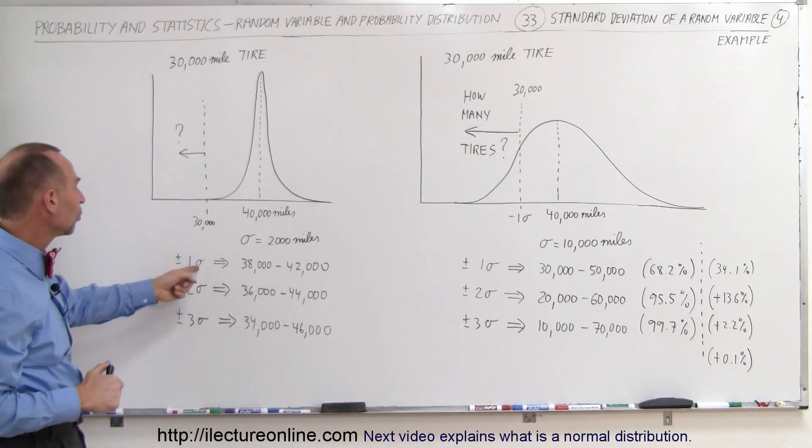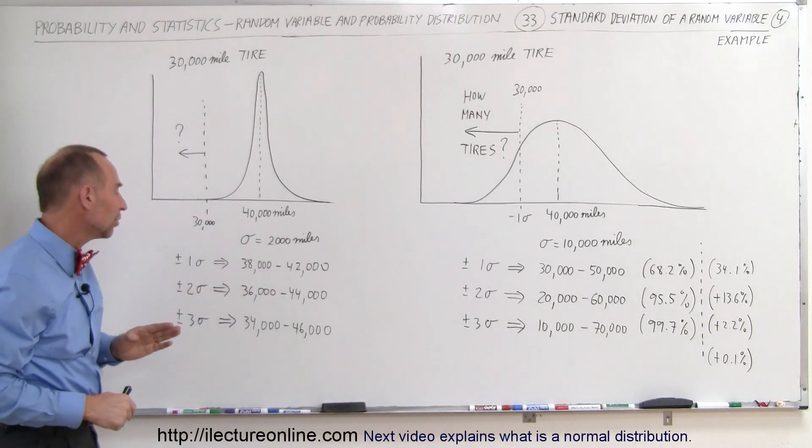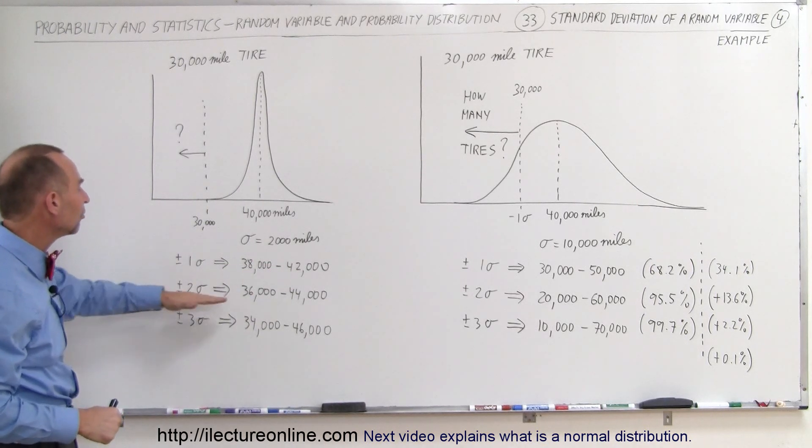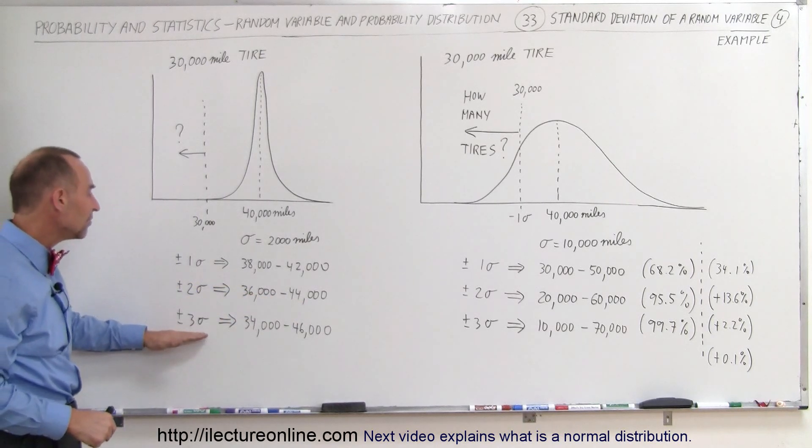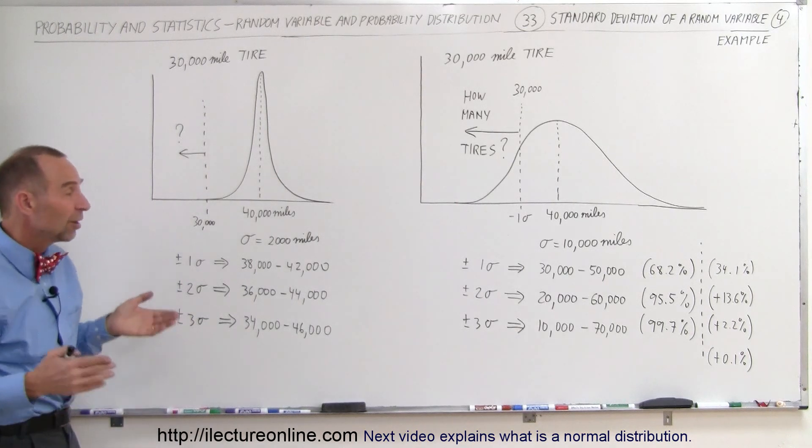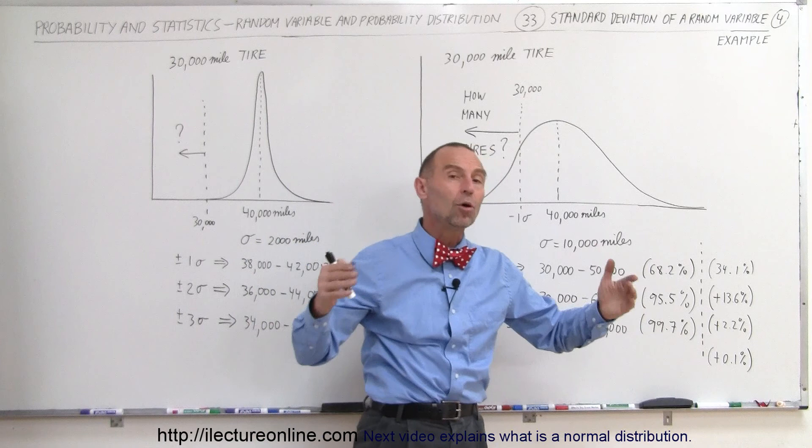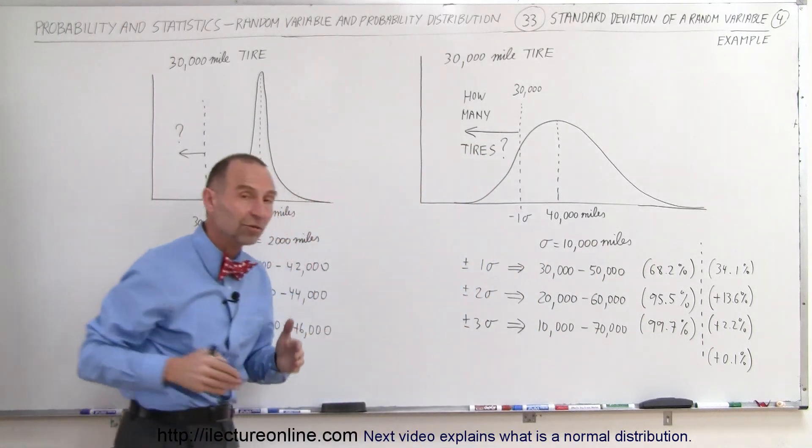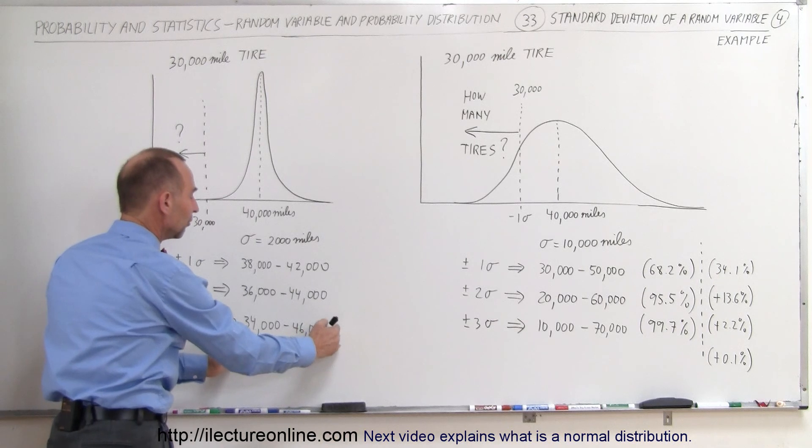Which means that plus or minus one standard deviation, the mileage is between 38,000 and 42,000. Plus or minus two standard deviations is 36,000 and 44,000. And plus or minus three standard deviations is 34,000 to 46,000. In other words, when we go up to three standard deviations, 99.7% of all the tires produced will have a mileage range between 34,000 and 46,000.